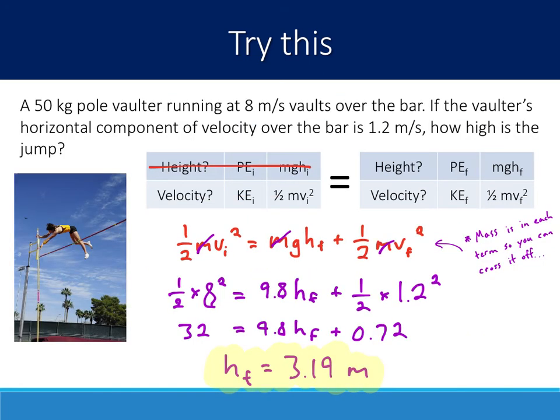Alright, one last one. When we take a look at a 50 kilogram pole vaulter and their initial speed of eight meters per second going over a bar, the horizontal component of the velocity is 1.2 meters per second. How high is the jump? So here we are starting at the horizontal surface and they're going up in the air gaining potential energy. So therefore the initial potential is zero, but we have some initial kinetic energy. At the top they have a combination of potential and kinetic, and what we're looking for is how high is the jump. So we're really going to solve for this h here, this height.